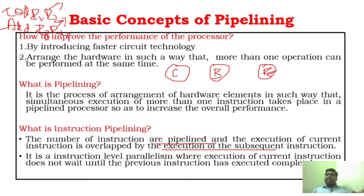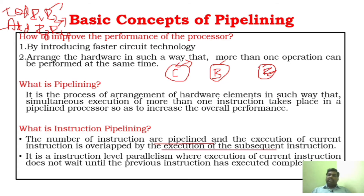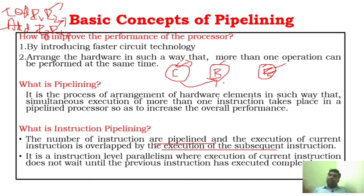Each and every station performs at the same time. The chassis station employees are building a chassis for one particular car, while building the body is done by different workers for a different car, and fitting the engine for yet another car takes place simultaneously. Once the chassis is done it is sent to the body station, and the chassis unit starts building the chassis for the next car.